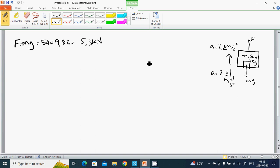And then it is moving up, then it is F result equals Ma. And F minus, F minus Mg equals Ma. The result force is F minus Mg. Then F equals Ma plus g times a, and it is 540 times 9.82 plus 2.2, and it is 6.5 kilonewtons.